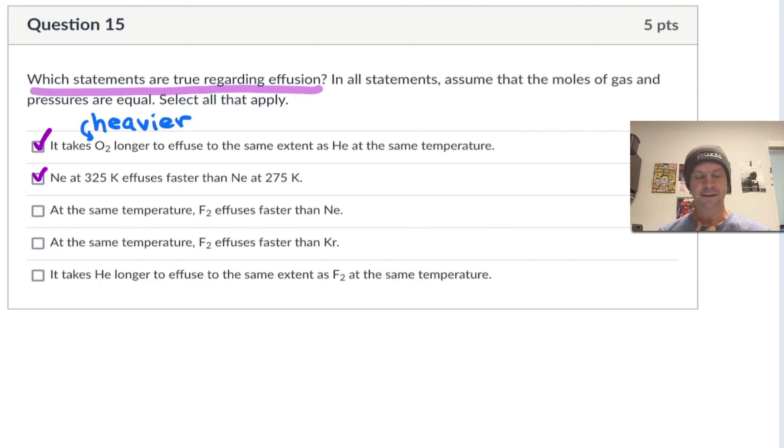At the same temperature, F2 effuses faster than neon. Well, again, if we think about heavier versus lighter, F2 is quite a bit heavier than neon. Neon is quite a bit lighter. Neon gas is quite a bit lighter than F2 gas. And so quite the opposite is true. Neon will effuse faster than F2. So this statement is false. It's backwards.